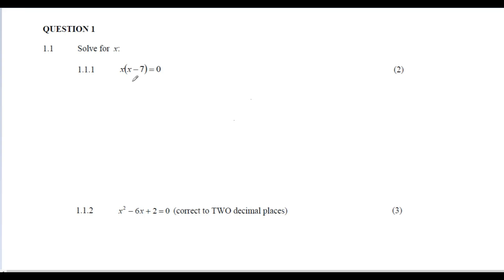We have x multiplied by (x - 7). If you're thinking of expanding this out, you're going down the wrong track. What you should see is that you have x multiplied by another number — in this case (x - 7) — and if the answer is zero, then one of those two factors must be zero, because zero times something is always zero.